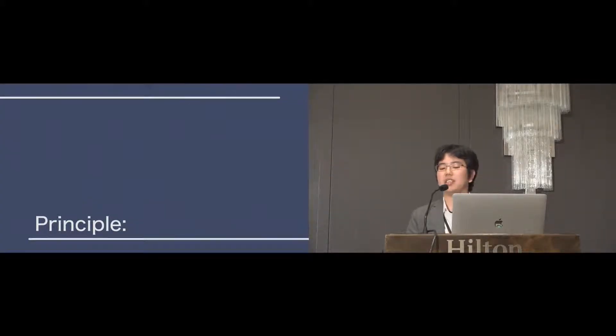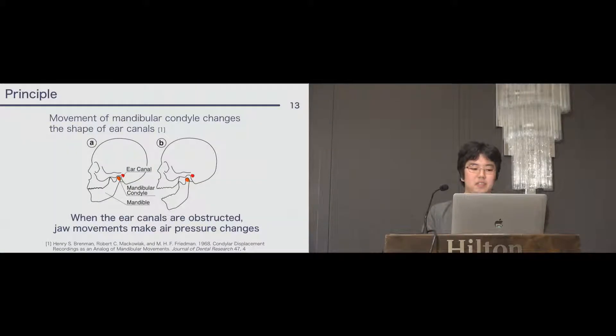Before we talk about our system, I will talk about why our system can recognize the face-related movements. A previous work says that movement of mandibular condyle changes the shape of ear canals. Comparing figure A and figure B, the positional relationship between the mandibular condyle and the ear canals are changed. According to this, the shape of ear canals are changed. Please insert your finger into your canal and open, close the mouth. Then you can know that the shape of the ear canals is changing.